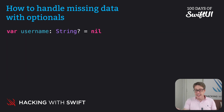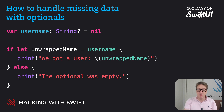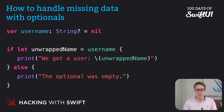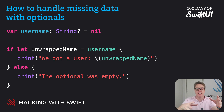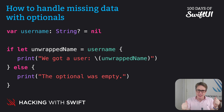For example: var username: String? = nil — it has no value right now. We run a bunch of code, maybe it still has no value. You can then say: if let unwrappedName = username { print("We got a user: \(unwrappedName)") } else { // the optional was empty }. Think of optionals as being a bit like Schrödinger's data type — there might be a value inside the box, or there might not be. But the only way to find out is to check: open the box and have a look inside.